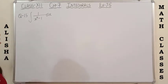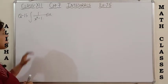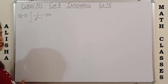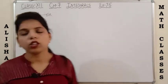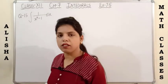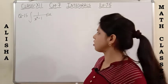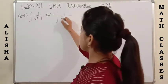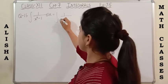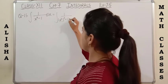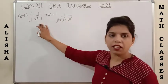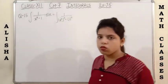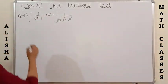Next is question number 15: integration of 1 upon (x to the power 4 minus 1). First we need to make factors. x to the power 4 can be written as (x squared) whole squared, and 1 as 1 squared. Using the identity a squared minus b squared equals (a plus b)(a minus b), this becomes (x squared plus 1) into (x squared minus 1).